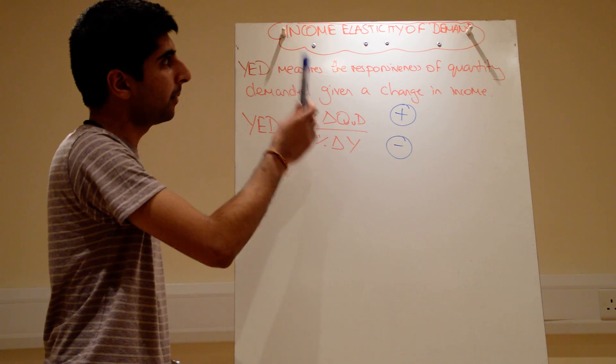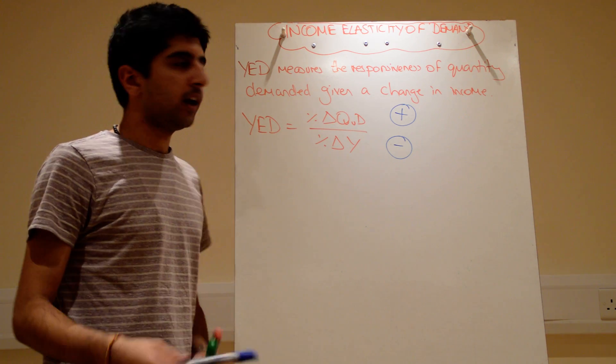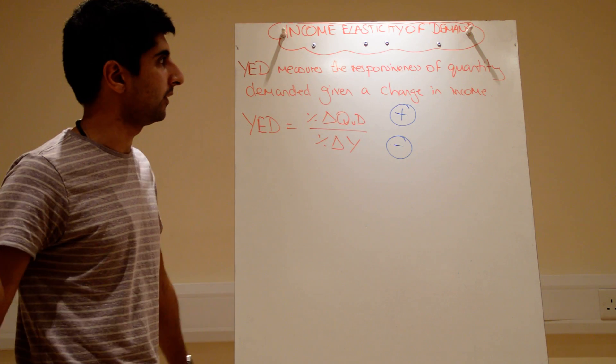Our next elasticity is income elasticity of demand. Hopefully by now things are becoming very easy and you can see a lot of correlation or symmetry between these elasticities.